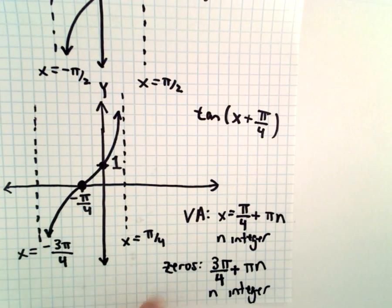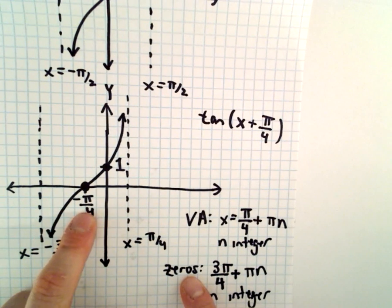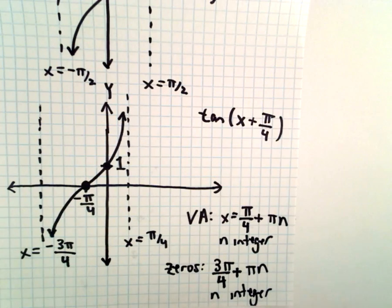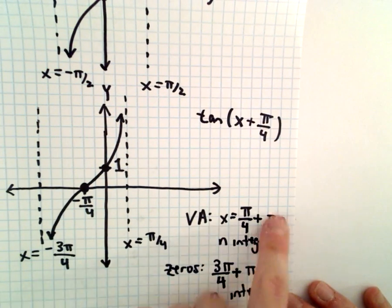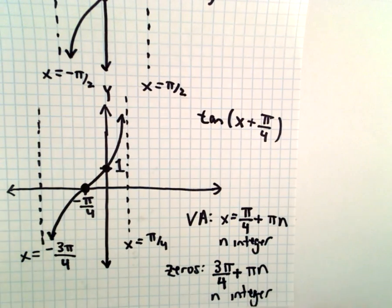You could have just as easily said the zeros are x equals negative pi over 4 plus pi n. But a lot of times when you see solutions, people often tend to use the smallest positive one and then tack on the pi n or whatever. So I'm just kind of following that convention.